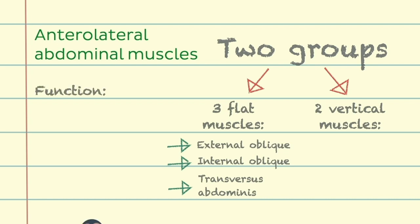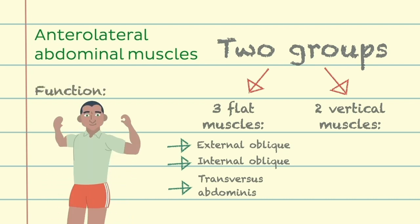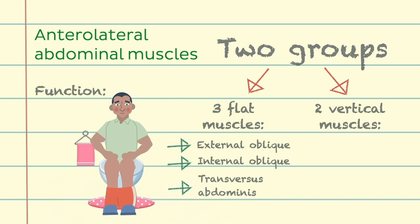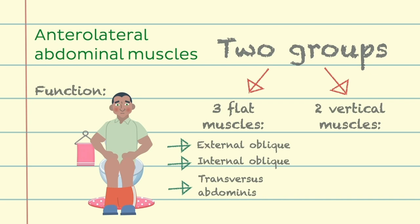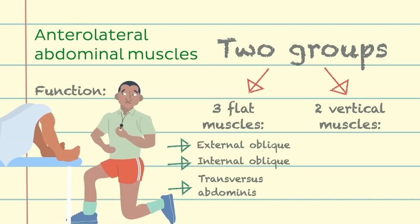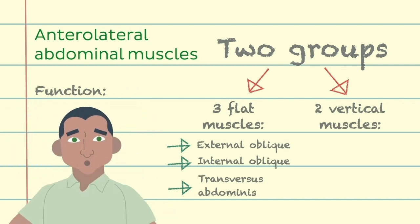These muscles function to flex and rotate the trunk, as well as compress the abdominal contents, thereby increasing intra-abdominal pressure and supporting the process of urination and defecation. The increased intra-abdominal pressure caused by the contraction of the abdominal wall muscles also assists in giving birth. Forced expiration using the abdominal muscles also helps expel materials from the airways, as in coughing or sneezing.